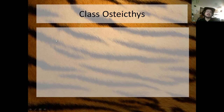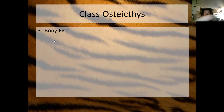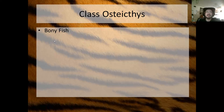Next up is class Osteichthyes, which is the bony fish. Osteo refers to the fact that they have bones like the rest of animals — hard, calcium-rich bones. An actual bone cell is called an osteocyte, so the prefix osteo refers to that type of bone.